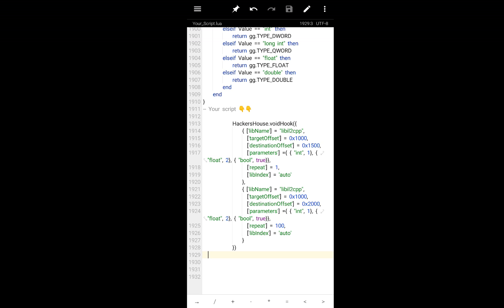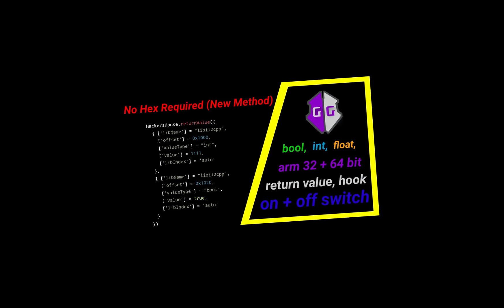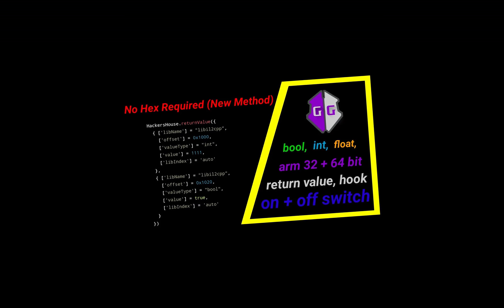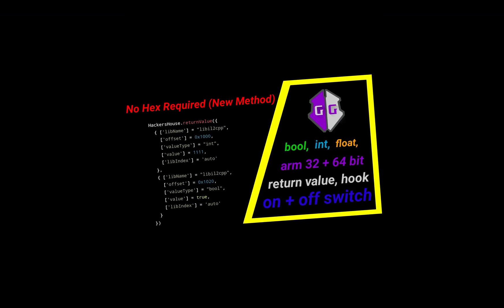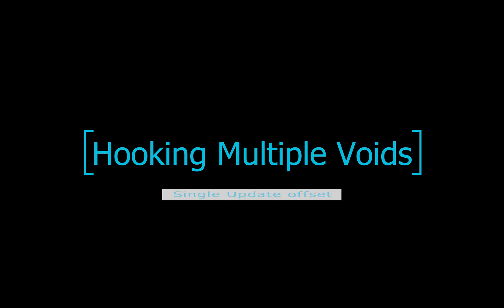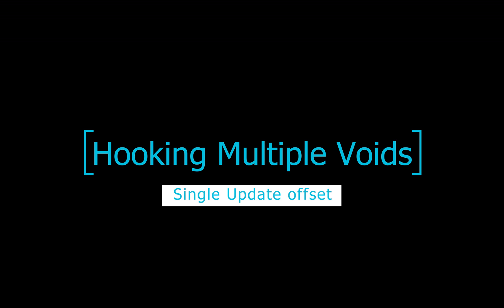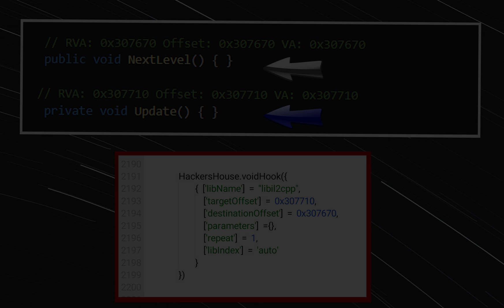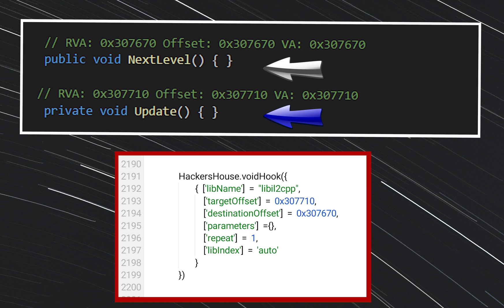I still recommend you watch the prerequisite video so that you can understand what we are actually doing, how to get methods, and other background information. In the beginning of this video we saw an example of void hooking — we hooked one method without parameters. In the target offset we put the update method offset, and in the destination offset we put the method we wanted to call.